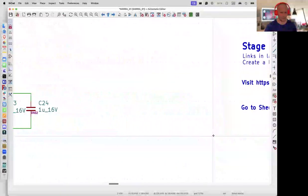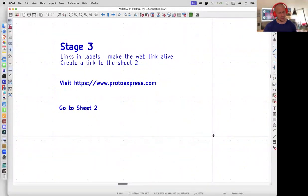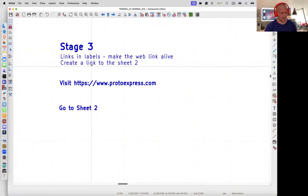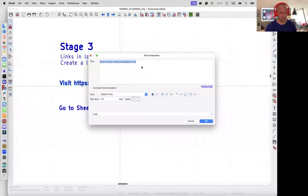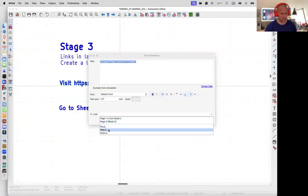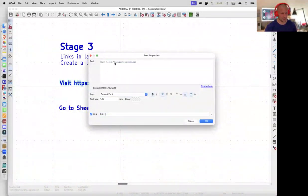Let's see stage three: Link in labels. That feature was introduced in KiCad version seven, I think. It's really useful. Let's say that we need to make the web link alive. Here, this is a normal text label. In the bottom of the text property window, there is a checkbox link. Then we can easily select the HTTP and place the URL in there. And now the link is alive.